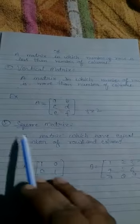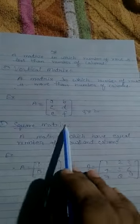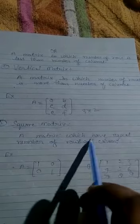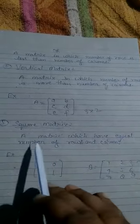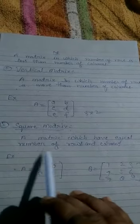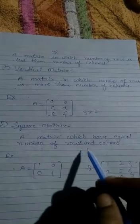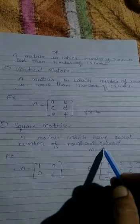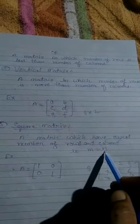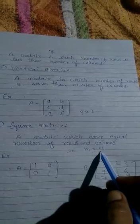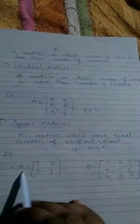Next, square matrix. A matrix which has equal number of rows and columns, where m = n. That means m is equal to n, row is equal to column.